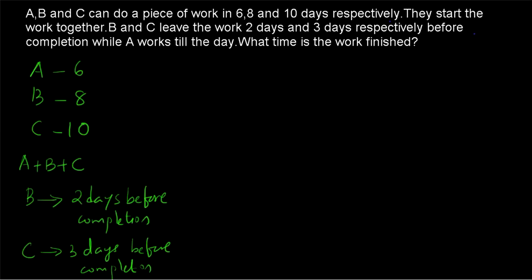So let's use the chocolate approach. A is taking 6 days, B is taking 8 days and C is taking 10 days. So we have to take the LCM of 6, 8 and 10 as the total number of chocolates. We are assuming that the work to be finished is the number of chocolates to be consumed, in order to have a better understanding. So here number of chocolates will be equal to LCM of 6, 8 and 10 which is equal to 120.